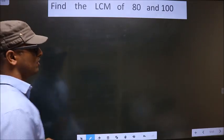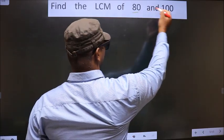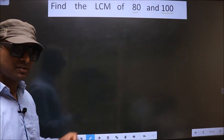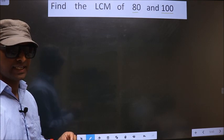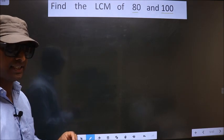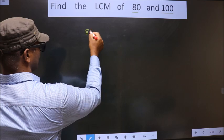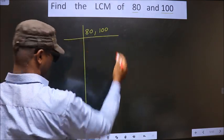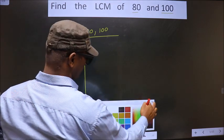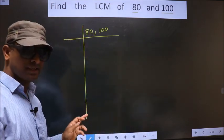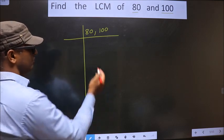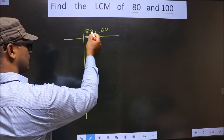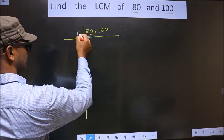Find the LCM of 80 and 100. To find the LCM, first we should frame it in this way — that is 80 and 100. Now we focus on the first number, that is 80. For this number, the last digit is 0, so we take 5 here.